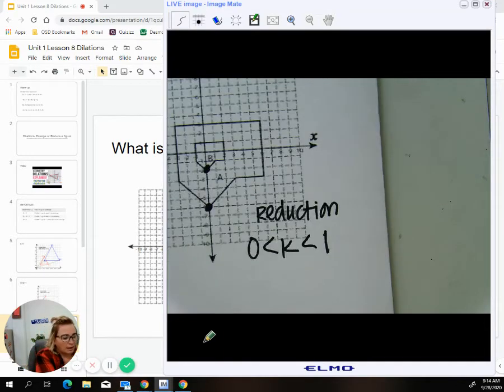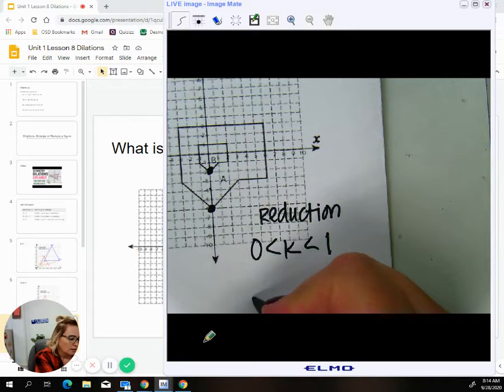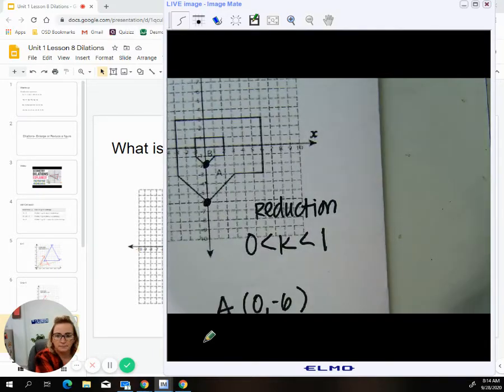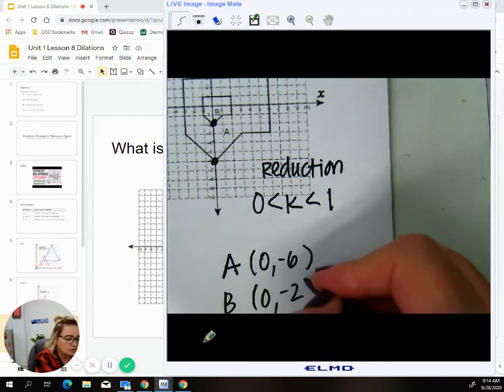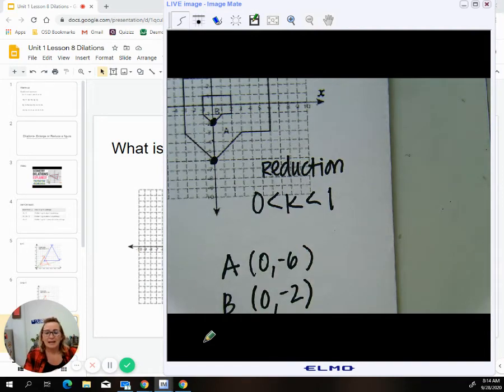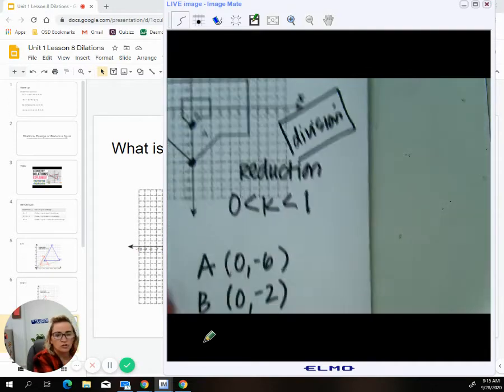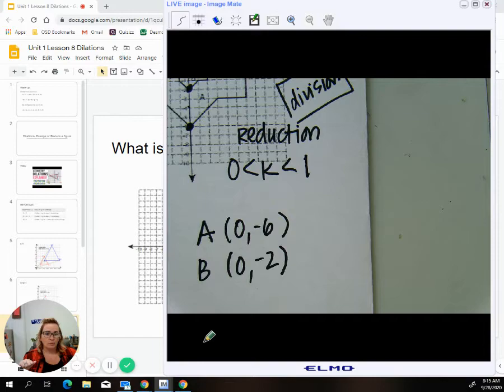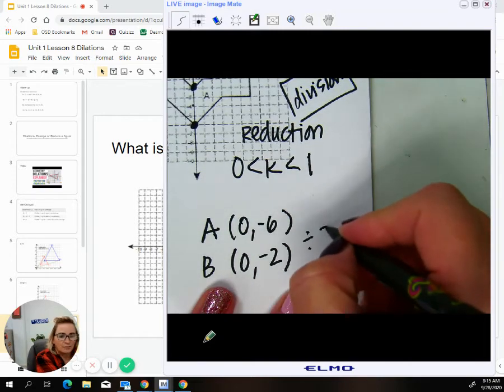So if I look at my points, this point is one, two, three, four, five, six, so zero negative six is the A point. The B point is zero negative two. And to get from the A to the B, we know that there had to have been some sort of a reduction, some sort of division. When we're reducing, we're dividing. So how would we get from a six to a two? Hopefully you would say that we would divide by three.